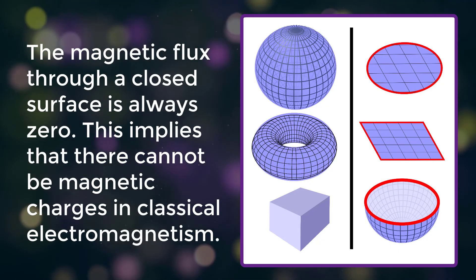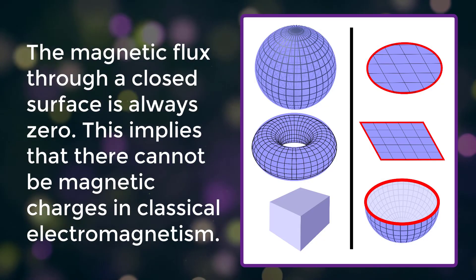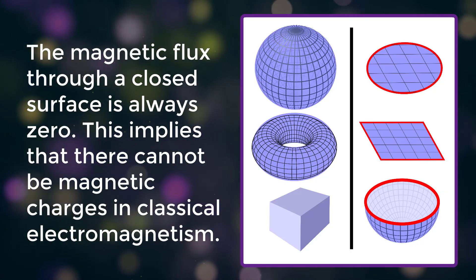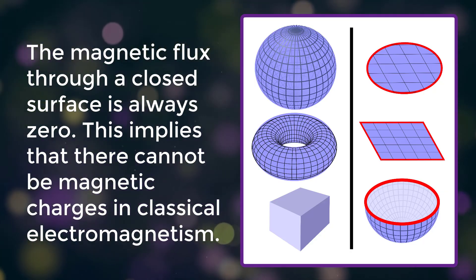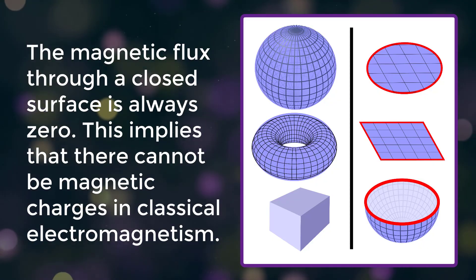The magnetic flux through a closed surface such as a ball is always zero. This implies that there cannot be magnetic charges in classical electromagnetism.